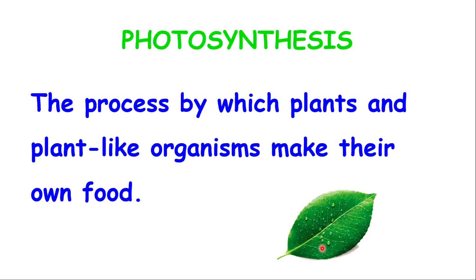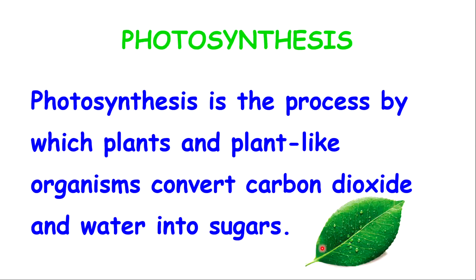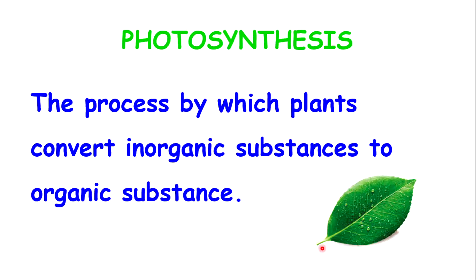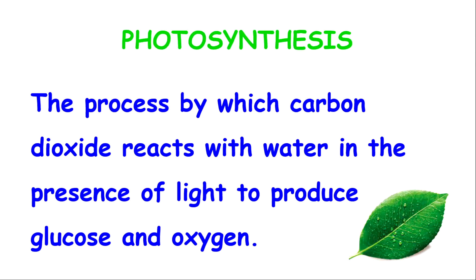Photosynthesis can be defined in many different ways. The very basic one is that it's a process by which plants and plant-like organisms make their own food. Another definition is that photosynthesis is a process by which plants convert carbon dioxide and water into sugars, or a process by which plants convert inorganic substances to organic substances. It can also be defined as a process by which carbon dioxide reacts with water in the presence of light to produce glucose and oxygen. The bottom line is that it is a food-making process in the presence of light.